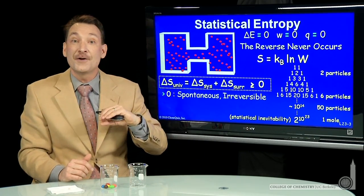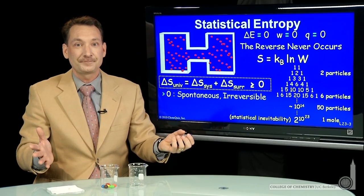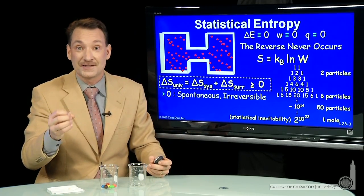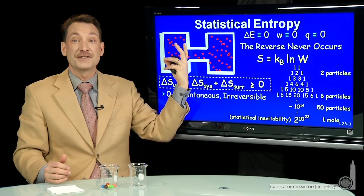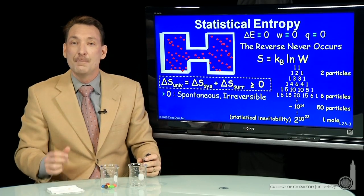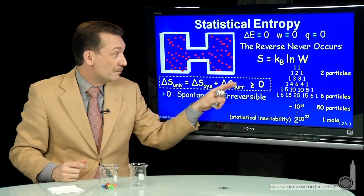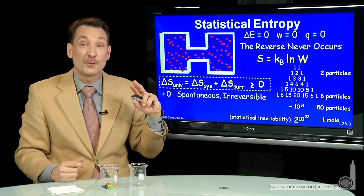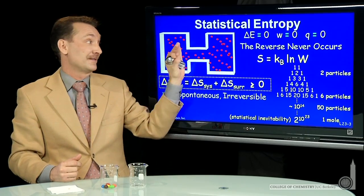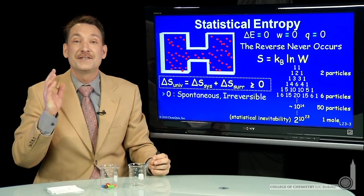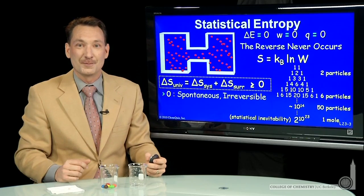Spontaneous processes are also called irreversible processes — we never observe the reverse process happening by itself. That doesn't mean we can't make the reverse process happen. We could create a system with a piston and push all these gases back to one side. But in doing so, we'd have to bring energy in from the surroundings, and bringing energy in from the surroundings changes the surroundings' entropy such that the overall entropy of the universe, even for that process of compressing to one side, would still be greater than zero.